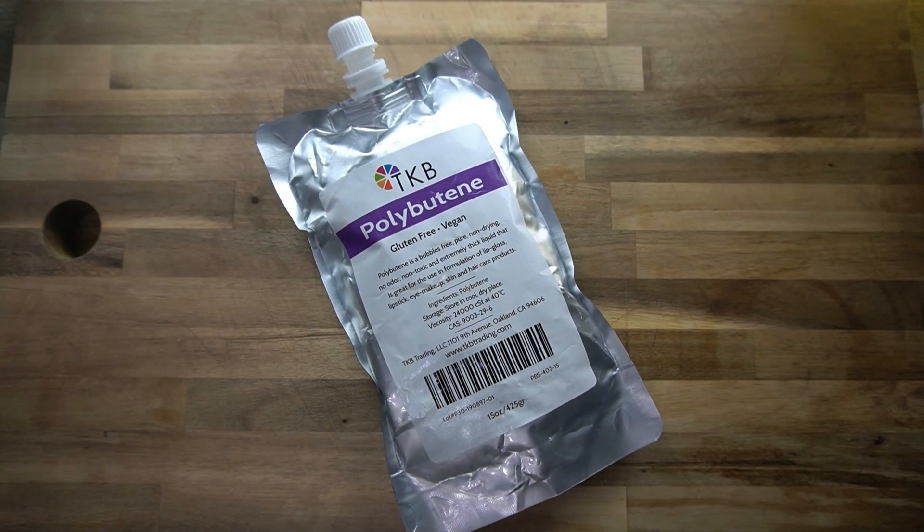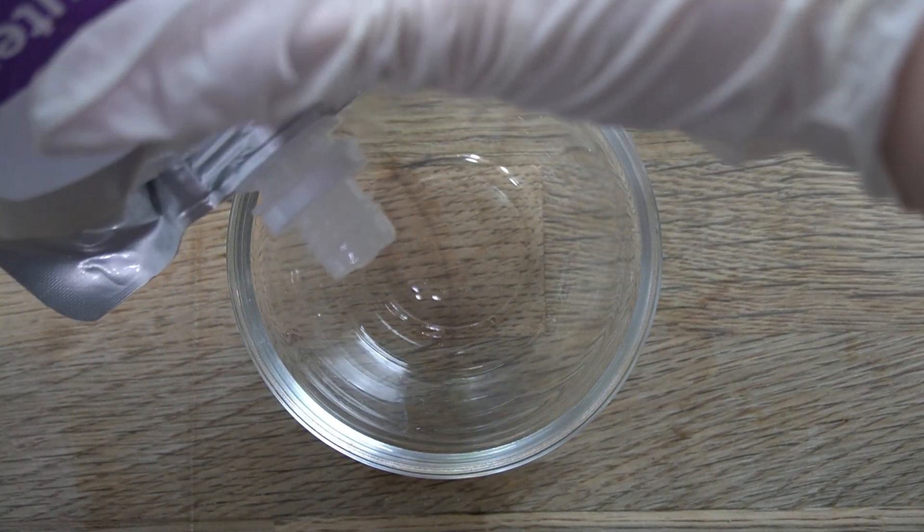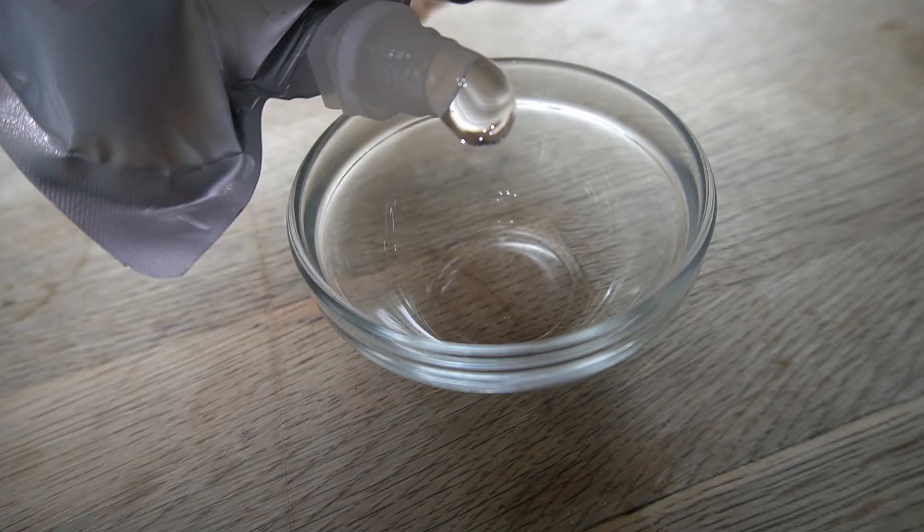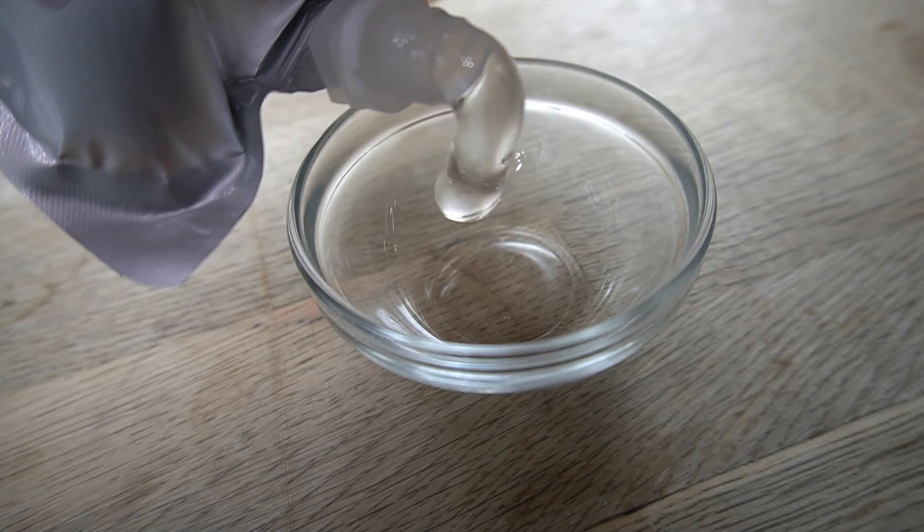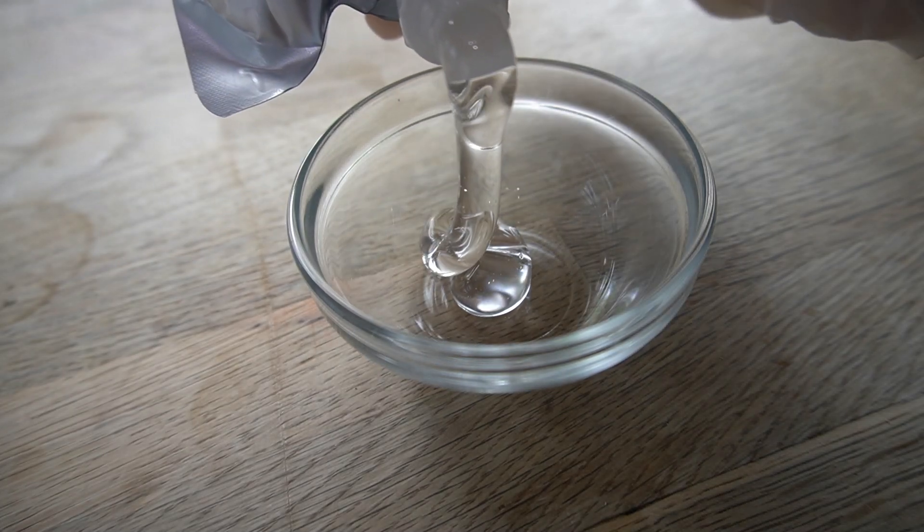Our base for this gloss is going to be polybutene. This is an incredibly clear, completely transparent gel that you do have to get at a cosmetic supply store. The texture is exceptionally thick, and you have to mix it with another ingredient that will thin this out.